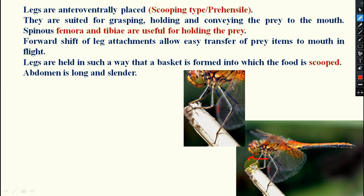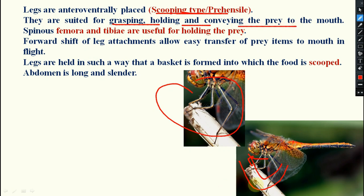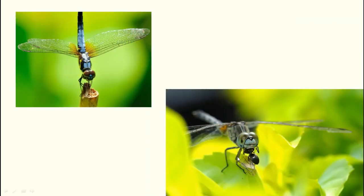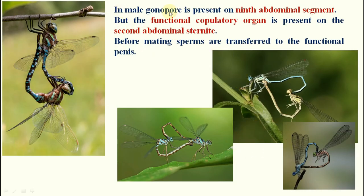Legs are anteriorly and ventrally placed, directed forward. This is a scooping type or prehensile leg, suited for grasping, holding, and conveying prey to the mouth. The forward placement of leg attachment allows easy transfer of prey items into the mouth during flight. Legs are held in such a way that a basket is formed into which food is scooped — hence the name scooping type. The abdomen is long and slender.